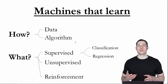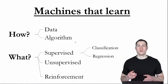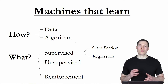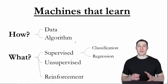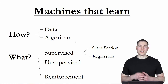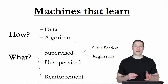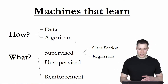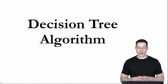In the previous video I simply said: you show the algorithm a bunch of examples and it will somehow learn to predict the label of a specific example solely by looking at its features. In this video and the next one, I'm going to cover what that learning process actually looks like. The specific algorithm we're going to look at is the decision tree algorithm.